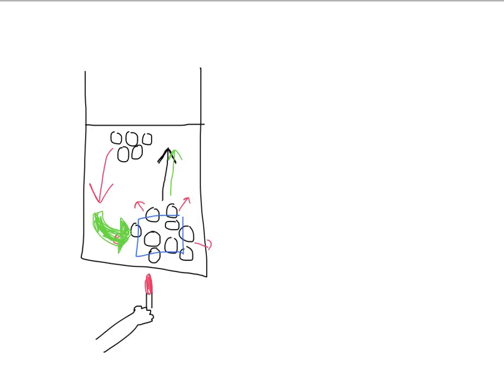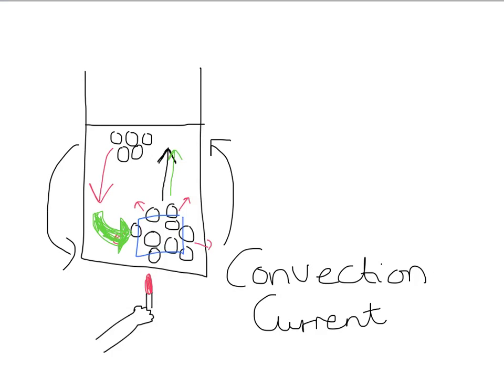And that warm liquid at the top, once it starts to contract, becomes more dense and falls. And what you can see is that you get this current or this kind of cycle, this flow, going up and then back down. And this is what's known as a convection current. That is a convection current. And that is our second method of heat transfer.